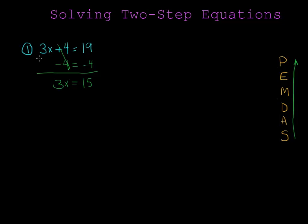I've taken a two-step equation and gotten rid of one of the numbers, leaving a simple one-step equation. Now the 3 is multiplying the x, so to get rid of it I use the opposite of multiplication which is division. I show my division with a fraction bar. If I divide one side by 3 I also have to divide the other side by 3, and I'm left with x is equal to 5.